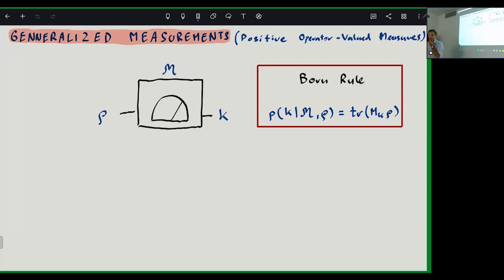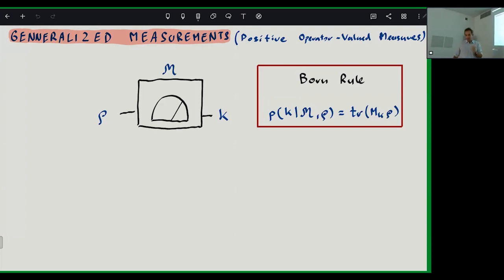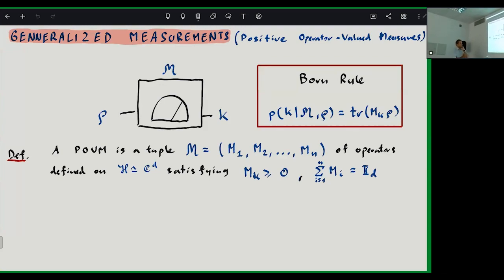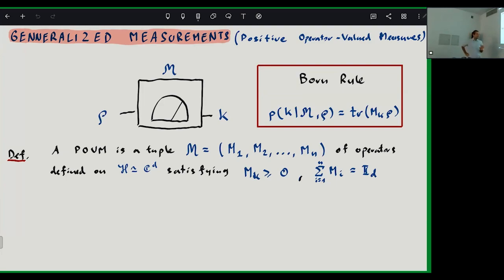This measurement operator is also called an effect. To ensure it forms a valid probability distribution, these effects must be positive definite — they have positive eigenvalues and are Hermitian — and they must form a resolution of identity on the given Hilbert space.